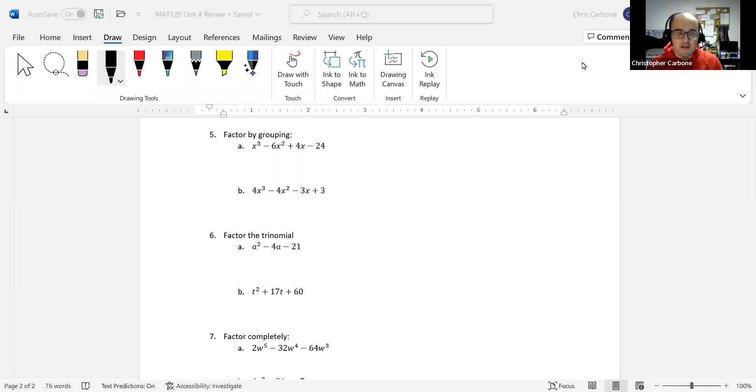For question number 5 on polynomial functions, we want to factor these by grouping. x cubed minus 6x squared plus 4x minus 24.